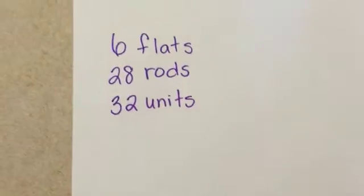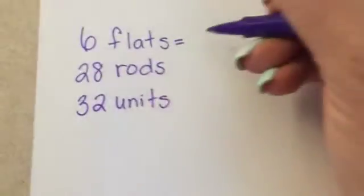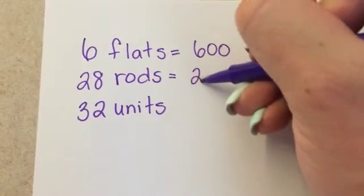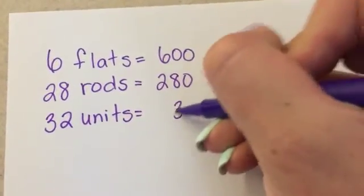Then I'm going to look at the value of each of these. So I know that 6 flats is equal to 600. I know that 28 rods is equal to 280. And I know that 32 units is equal to 32.